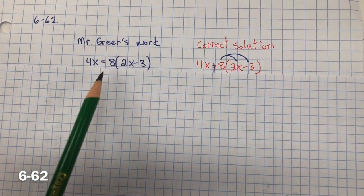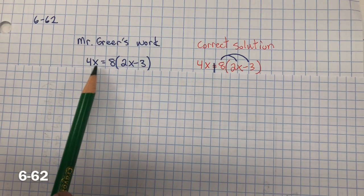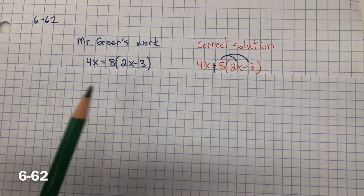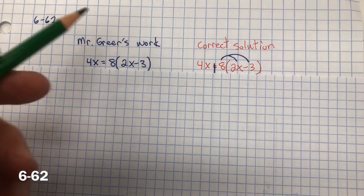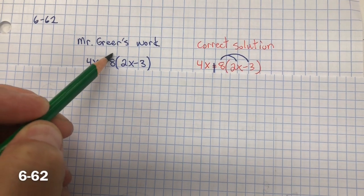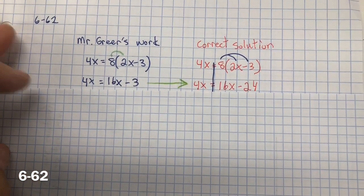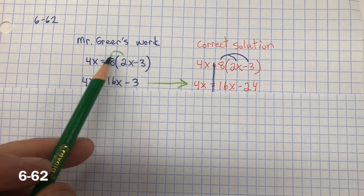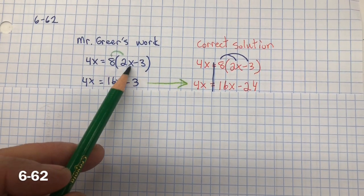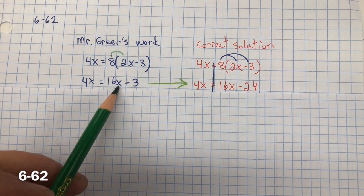So here's the original equation. Here's Mr. Greer's work. Here's the correct solution. So you need to distribute first. And you can see that Mr. Greer only distributed to the first. 8 multiplied by 2x is 16x.